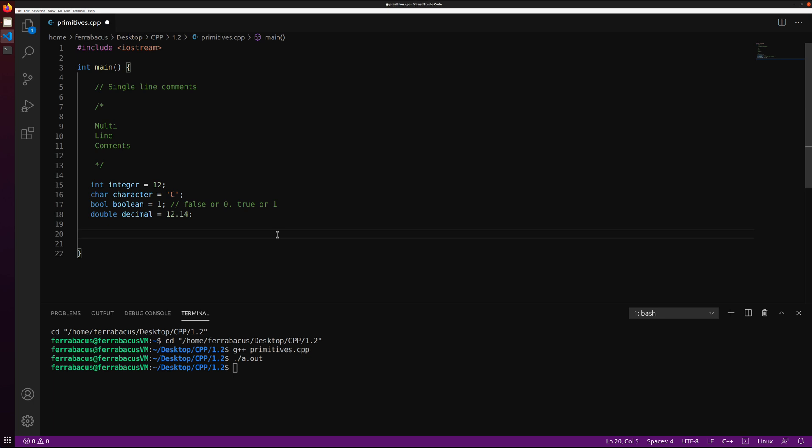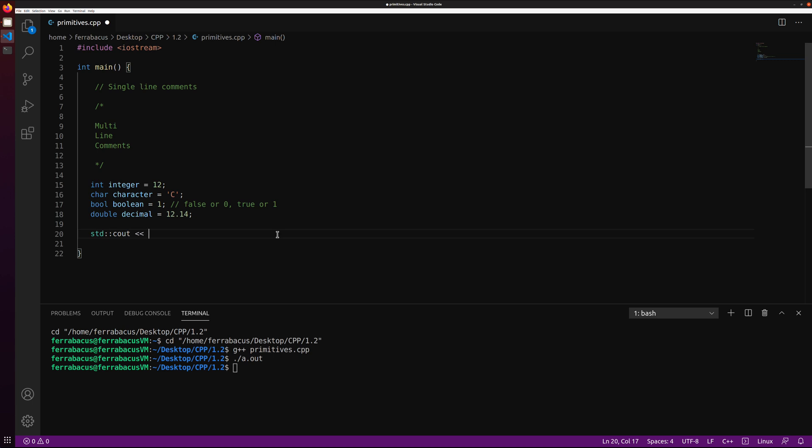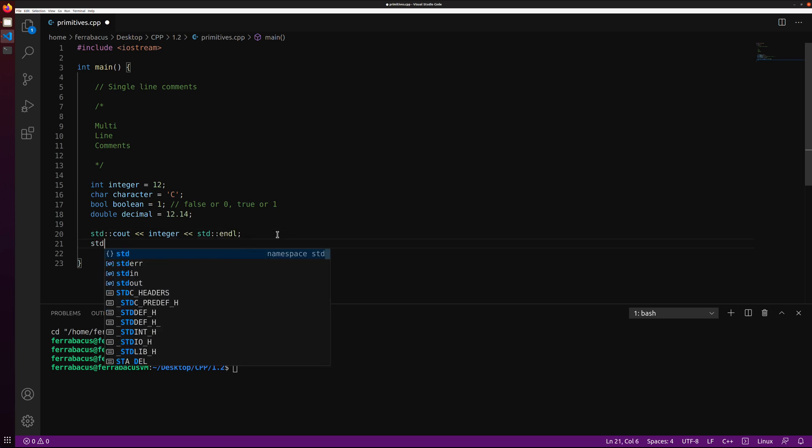And then we need, let's do a double and we'll call it decimal. Let's give it a 12.14. Now I'm going to give this a run in our compiler. So I'm opening up my terminal here and I'm going to call the compiler with G plus plus. I'm going to send it the file name, primitives.cpp. It must have compiled successfully. And so I'm going to run it. So dot a dot out. And nothing should happen, right? We haven't printed anything at this time. So let's get these printed out so we can see what that looks like.